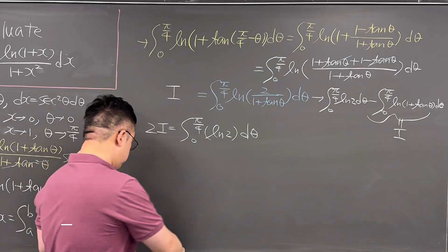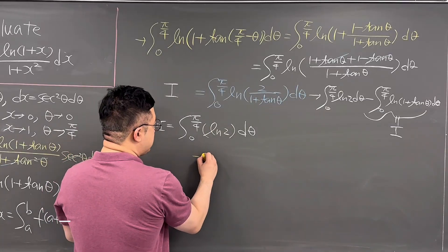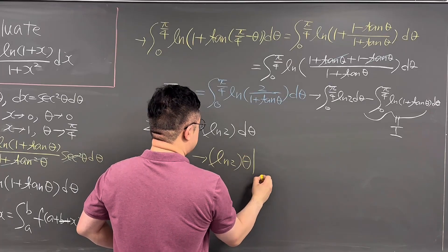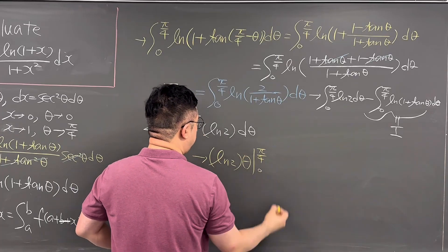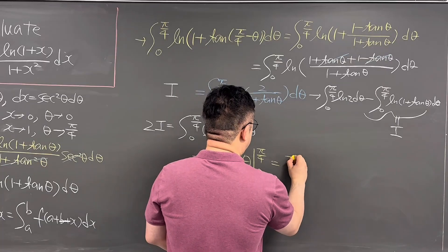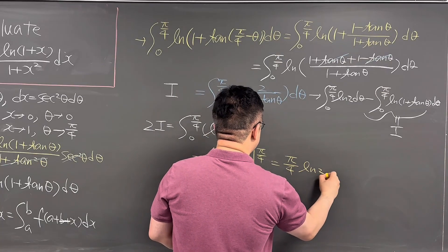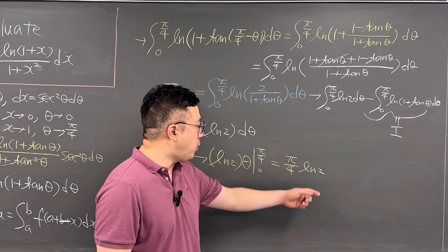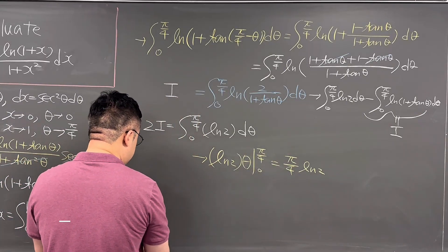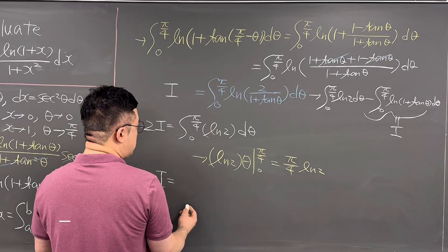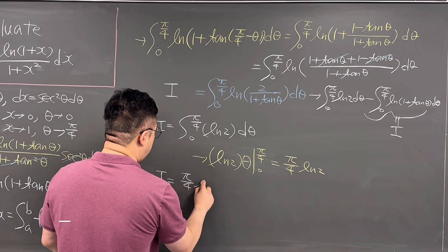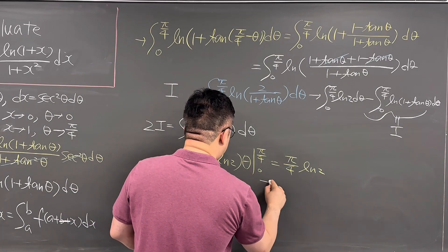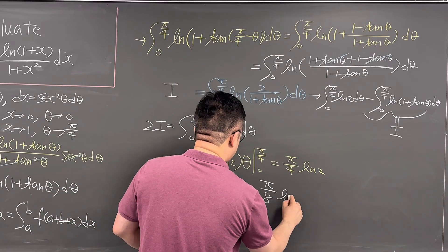Evaluating this integral, we get ln 2 times theta evaluated from 0 to pi over 4, which equals pi over 4 times ln 2. So 2 times I equals pi over 4 times ln 2, and therefore I equals pi over 4 times ln 2 times 1 over 2, which gives pi over 8 times ln 2.